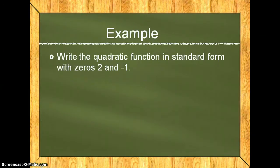So the example says, write the quadratic function in standard form with zeros 2 and negative 1. The first thing that you need to understand is that that is the two things that x is equal to. So x is equal to 2, or x is equal to negative 1. If you wanted to set these both equal to 0, you would have to work backwards.